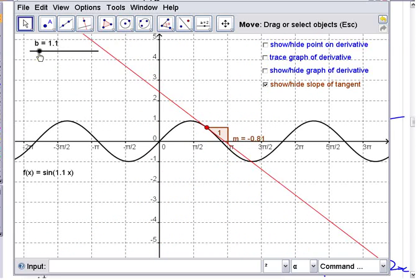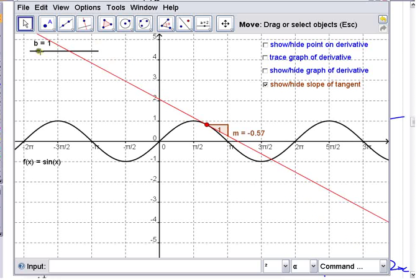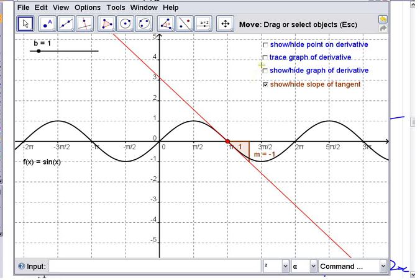When it's just sine of x, when it's just sine of x, the slope through the middle here is 1. So when you look at the graph of the derivative, its value is 1 and negative 1 here.